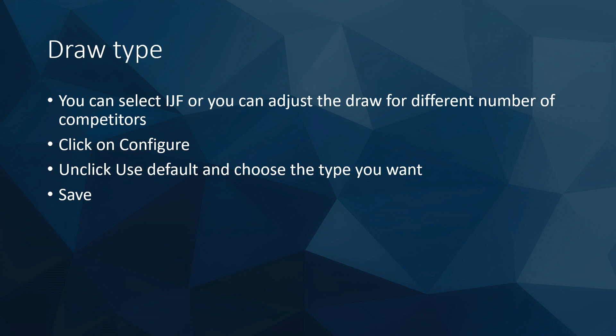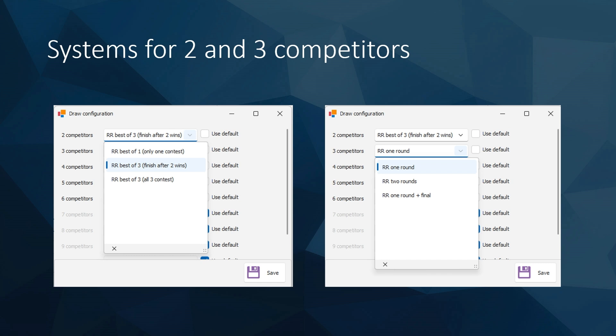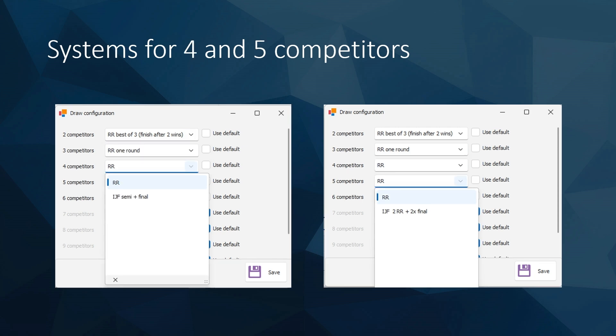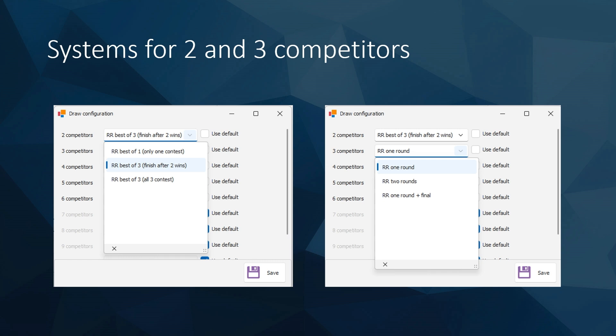For draw type in judo-based competition, you can either select IGF or adjust the draw for different numbers of competitors. Click on configure, click set default, and then save. We will go through this procedure practically. There are systems for two and three competitors: you can have only one contest, finish after two wins, or have all three contests.